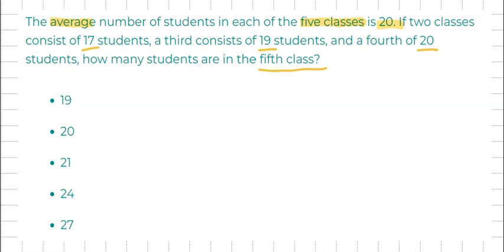So we're trying to work out how many students are in the fifth class using the numbers we've been given. The equation is going to be as follows as we already know the average.